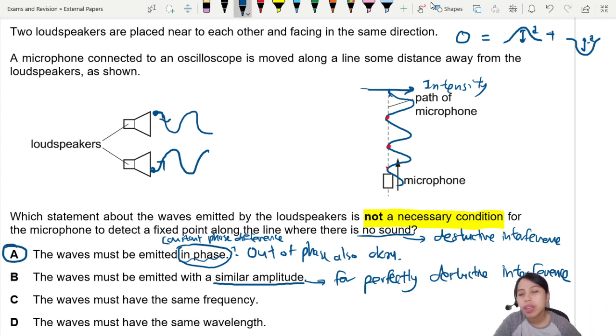But the problem is, what if you have one where the amplitude is A and the other one has amplitude negative half A - slightly different amplitude already? Will you get zero? Will you perfectly cancel out? No, so this one cannot perfectly cancel each other out. There will not be a point where there is no sound at all. So this is a necessary condition - you must have same amplitude.